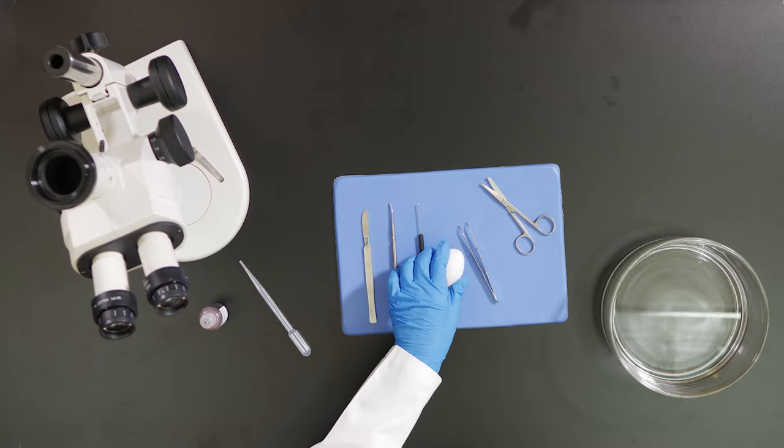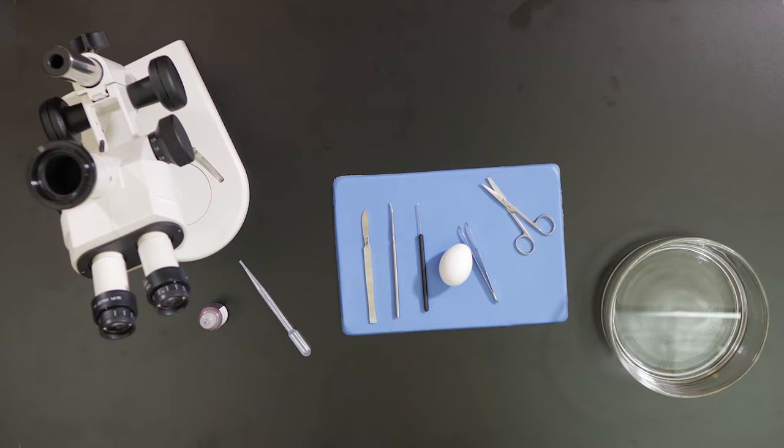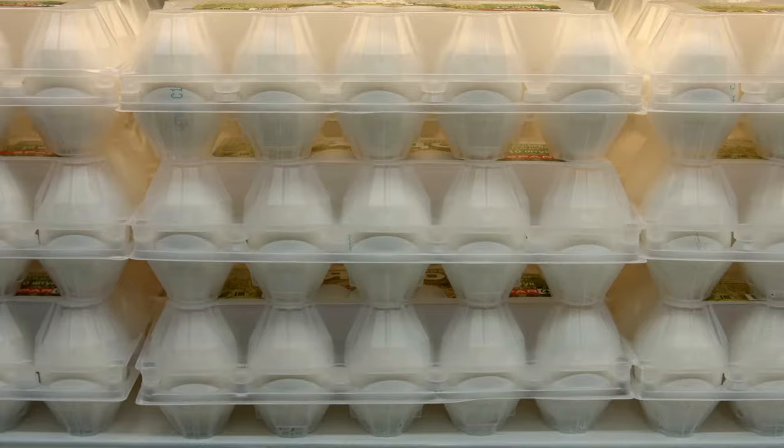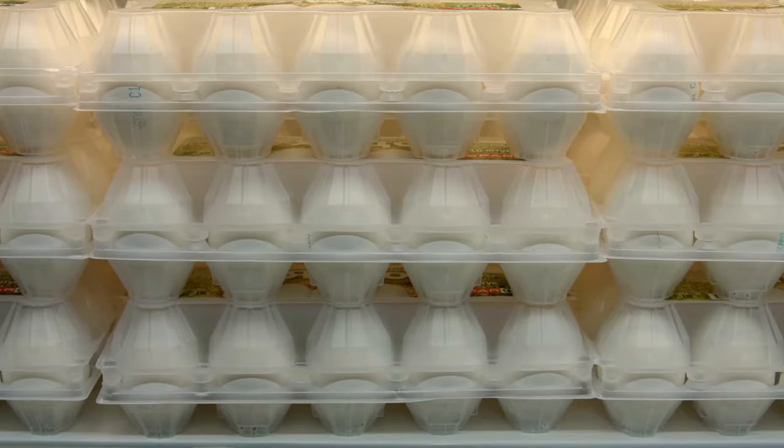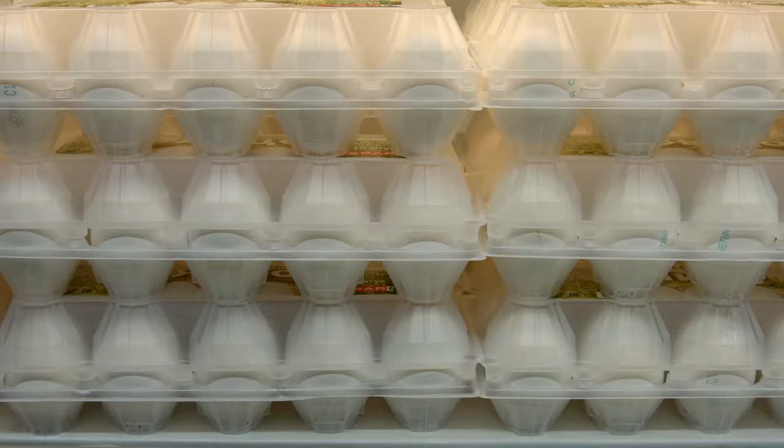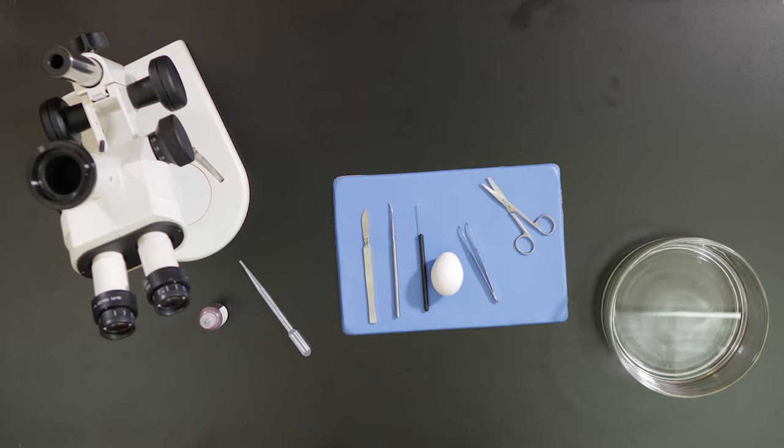At this stage in its development, the embryo is very tiny and it is embedded in the yolk of the egg, so we need to take some steps to help us see the embryo. Remember, these eggs have been fertilized, so they are not like the eggs you buy at the grocery store.